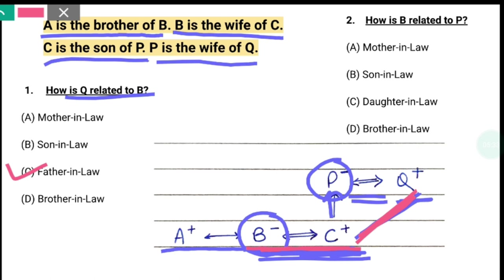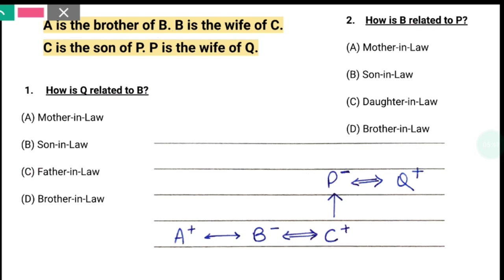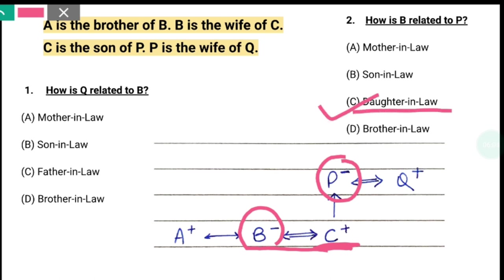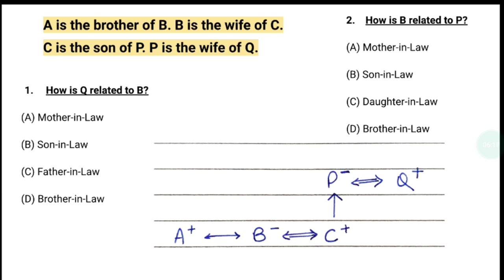उसी तरह से हमें देखना है how is B related to P। इसके लिए हमें P से होते हुए B की ओर जाना है। P के son हैं C और son की wife हैं B। तो son की जो wife होती है, वो होती है daughter-in-law। तो यहां से हमारा answer आएगा C। First question का भी C option था father-in-law, second का daughter-in-law। तो आज भी कुछ इस तरह के और कुछ थोड़े different तरह के questions लेके आई हूँ, so that आप different types के questions देखें। तो exam में आपको इससे काफी help मिलेगी।